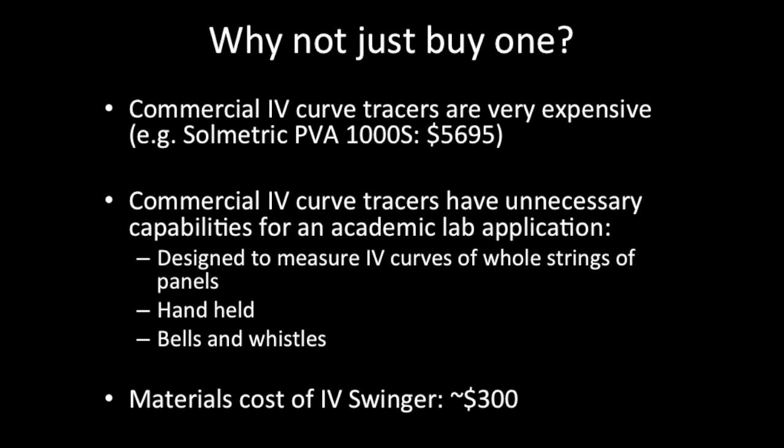Why don't we just buy a commercial IV curve tracer? There are commercial ones, but they're very expensive. A typical one is the Solimetric PVA-1000S, and the current price is about $5,700. They're expensive partly because they're designed to measure IV curves for whole strings of panels, they're small and handheld so you can carry them up on a roof, and they have lots of bells and whistles we don't need in a lab situation. The IV Swinger's materials cost is about $300, so it's far, far less expensive.